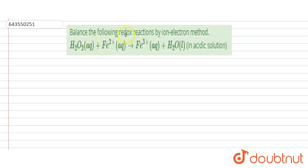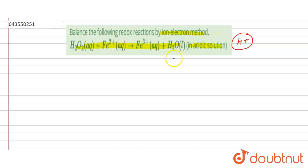The question is: balance the following redox reaction by the ion-electron method. We are given this reaction and we have to balance it in acidic solution, meaning H⁺ ions are present. The ion-electron method is used for redox reactions, which contain an oxidation reaction and a reduction reaction. First, we will write the oxidation and reduction half-reactions.